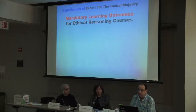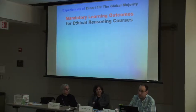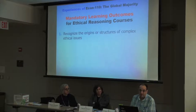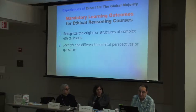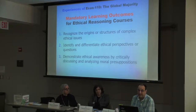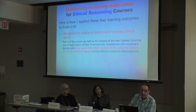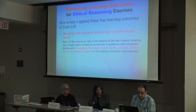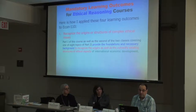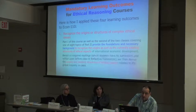The learning outcomes for ethical reasoning are clearly defined and mandatory — you cannot change even one word. The four are: (1) recognize the origins or structures of complex ethical issues; (2) identify and differentiate ethical perspectives or questions; (3) demonstrate ethical awareness by critically discussing and analyzing moral presuppositions; and (4) apply ethical concepts and frameworks. For the first learning outcome, part one of the course and the second class of each topic in part two provide the foundations and necessary background for recognizing origins.